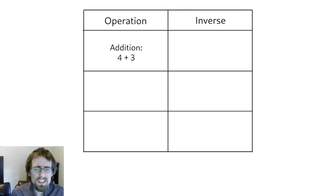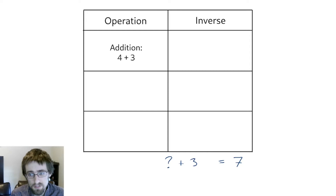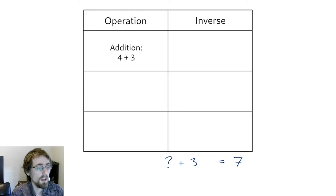Let's first look at addition. Let's say that this morning I had a certain amount of apples, but I forgot how many. I remember that during the day I went to the shop and bought three apples, and now that I'm back home I can count that I have a total of seven apples. I don't remember how many I had this morning, but I know I now have seven. Is there a way to figure out how many apples I had at the beginning of the day?